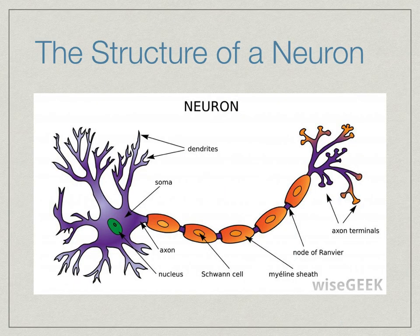To understand neurons, you need to know how a neuron is structured. Neurons vary in size — they can be less than a millimetre long, but they can also be up to a metre long.